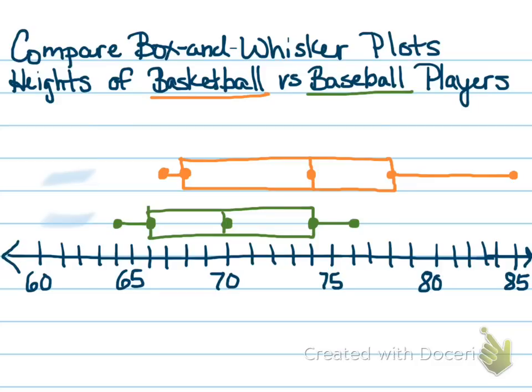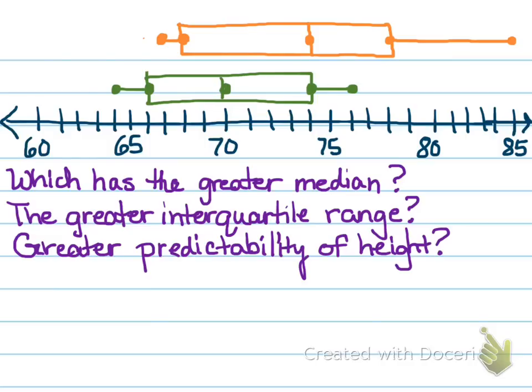I've got the basketball players above the baseball players. You notice what I did there? Orange for the basketball, green for the field. Tried to color code here. So what can you tell when you compare the data? Let's look at the data and see if we can tell which has the greater median.